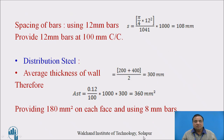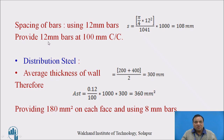For the spacing of bars, 12 mm diameter bars are used and the spacing works out to 108 mm. So provide 12 mm diameter bars at 100 mm center to center. This is the main steel to take the bending moment at the base of the stem slab.